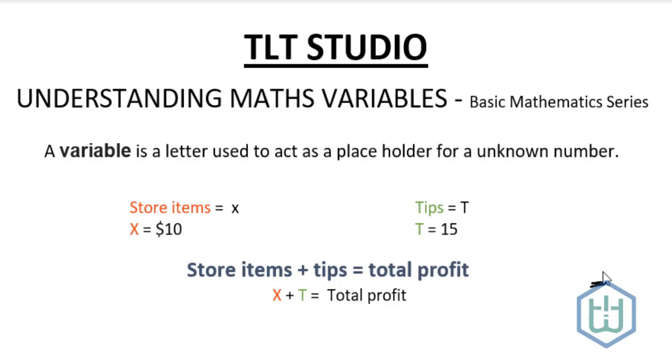A variable is a letter used to act as a placeholder for an unknown number. So when you look at an equation and you see a letter in it, what the letter represents is an unknown number that you don't know, that you're supposed to find.